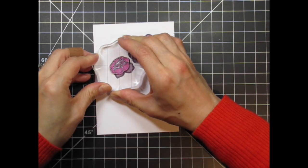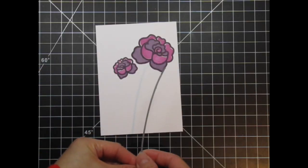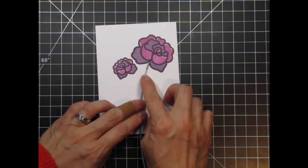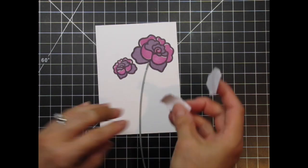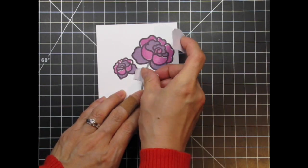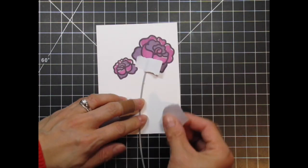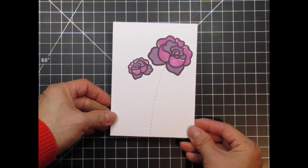Next I'm going to use the curved stitch die to create the stem on these roses. I just position it on the panel, hold it in place with masking tape, and run it through my big shot. I do the same for the other rose but use the curve in the opposite direction.